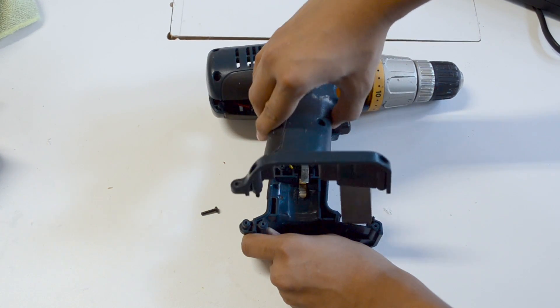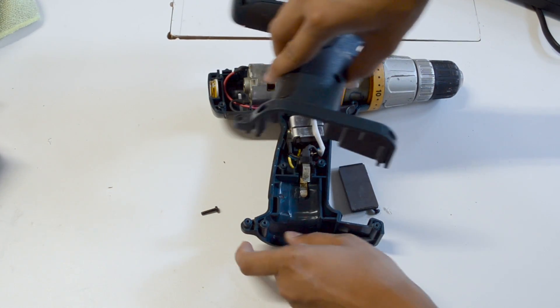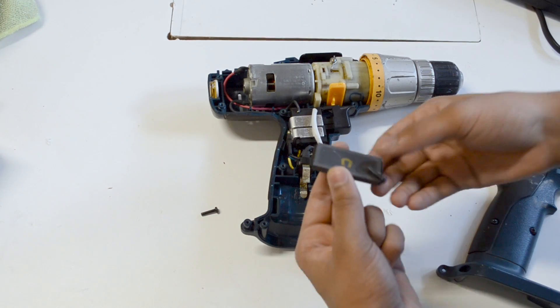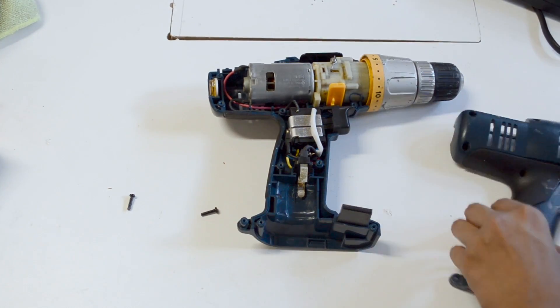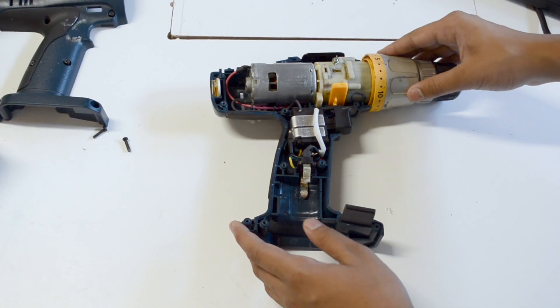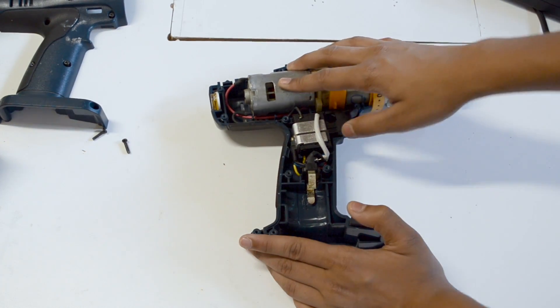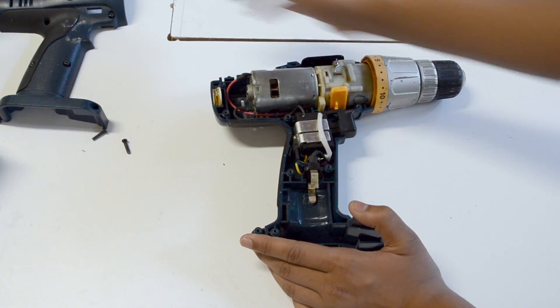After that you can slowly take the two halves apart making sure not to damage anything. At this point you can clean any grimy parts of the interior with a simple cloth.